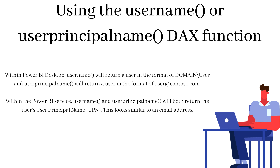It is very important for you to know the difference between the username and user principal name DAX functions. Whenever we implement RLS, we will use either username or user principal name. In my experience, I always suggest using user principal name rather than username. The reason is simple: within Power BI Desktop, username returns a user in the format of domain slash user — for example, ABC slash your name. User principal name returns a user in the format of user at contoso.com, or your company name dot com. So basically, your company email address related to your account is returned only with user principal name.